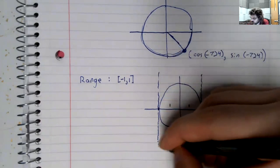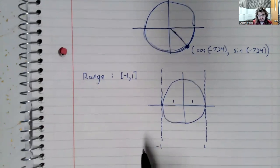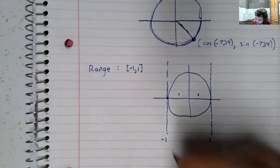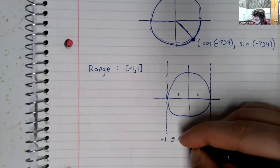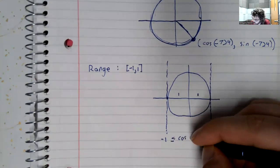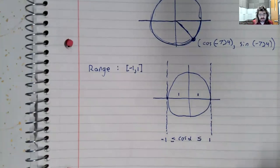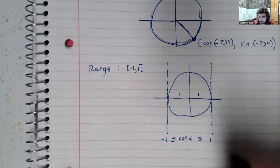So horizontally, all of the points on this circle are stuck between negative 1 and 1. So these x-coordinates are cosines. So the cosines are stuck between negative 1 and 1.